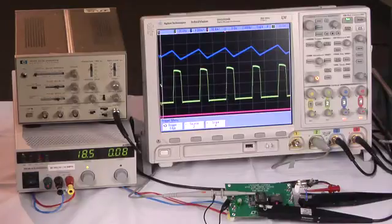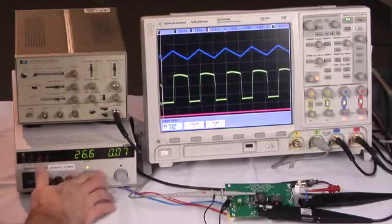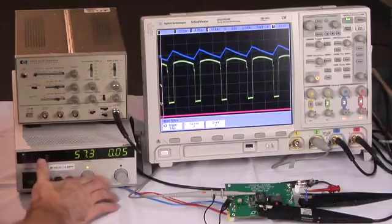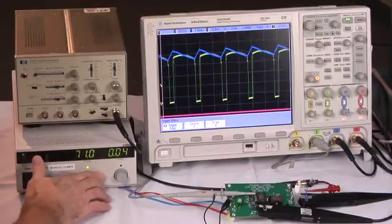The upper trace is the transformer magnetizing current, and the lower trace is the primary drain voltage. As I vary the input voltage, the duty cycle and reset voltage change, but the magnetizing current remains nicely centered around zero.